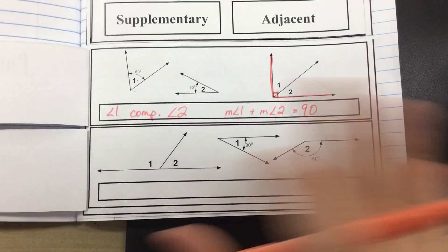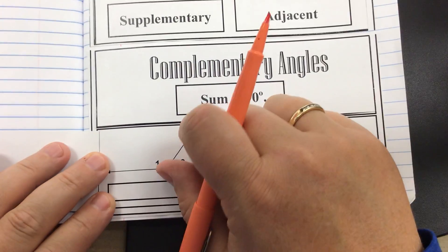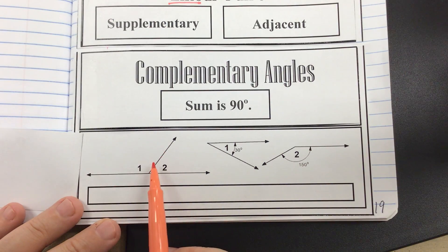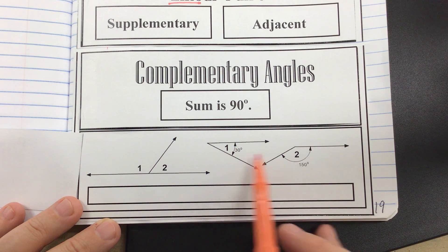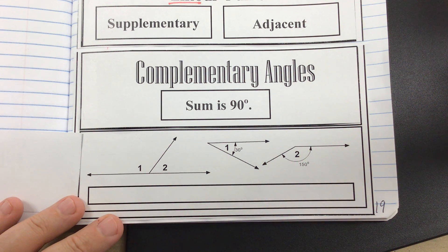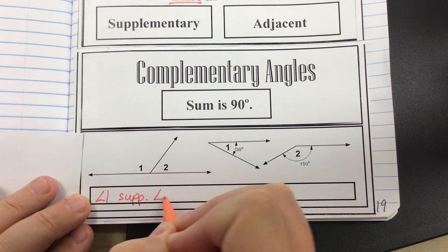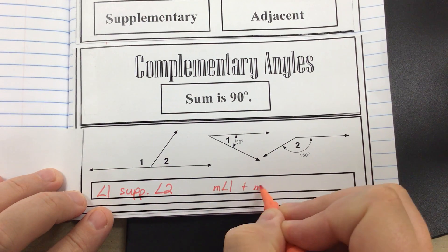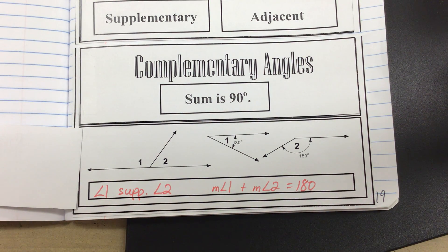For supplementary: remember the sum is 180. They could be a linear pair, but they don't have to be. The picture on the left is a linear pair — they are supplementary. The picture on the right shows 30 plus 150 equals 180. Notice angle one and two are not touching — they're not adjacent — but they still add up to 180. So I can write it two ways: angle one is supplementary to angle two, or the measure of angle one plus the measure of angle two equals 180 degrees.